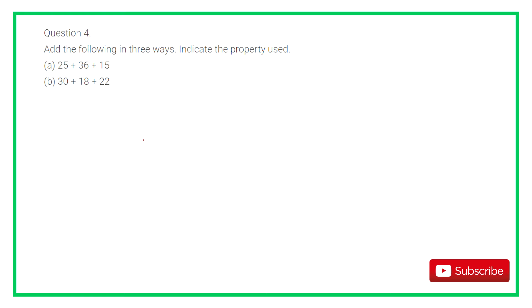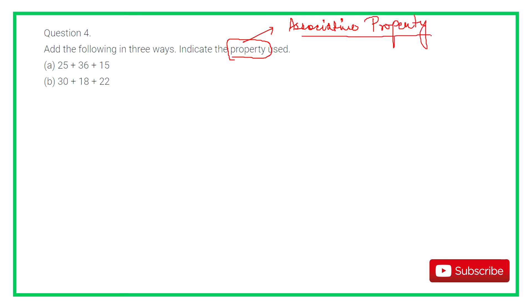Question 4: Add the following in 3 ways and indicate the property used. We are going to use the associative property. Associative property states that A plus (B plus C) is the same as (A plus B) plus C. This means brackets can change grouping, but the addition of all three numbers remains the same.